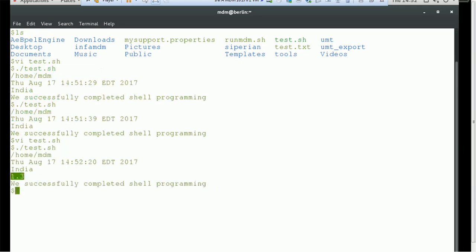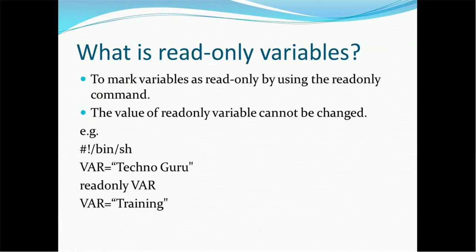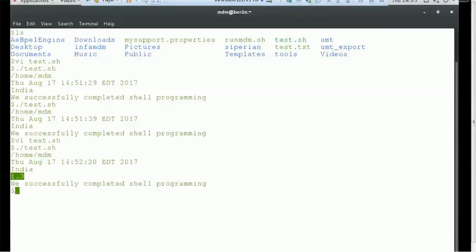The number also gets saved, so it's very simple — shell stores variables with numbers as well. The next thing we are going to see is read-only variables. Most of the time we don't want a program to override the value of a variable, so in that case we make the variable read-only using the readonly command. The value of a read-only variable cannot be changed. For example, if you declare 'var=technoguru' and mark it readonly, then try to change the value, let's see what happens.